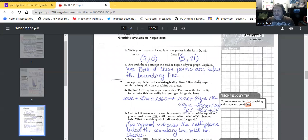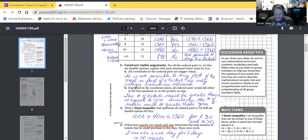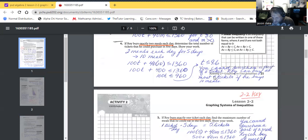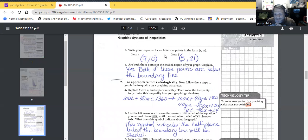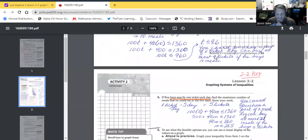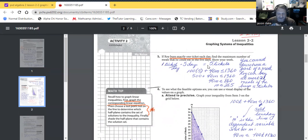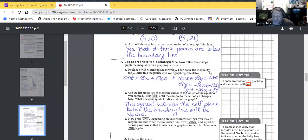All right guys, so here we go. Remember what I told you above. So let's look at our 9 tickets, 10 meals right here. So write your response for each item as points in the form T comma M. So 9 tickets comma 10 meals as an ordered pair. Let's look at item number 5: 5 tickets, 21 meals. Let's go back up to item number 5, and 5 tickets, 21 meals. And we write that as an ordered pair. Are both those points in the shaded region of your graph? Explain. Yes, both of these points are below the boundary line.